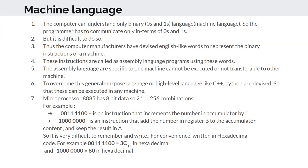These English-like instructions are called assembly language. Assembly language is specific to one particular machine — an instruction that works on Intel will not work on Zilog. Since the assembly language is given by the manufacturer, the programmer must learn the assembly language of that specific machine. Assembly language of one machine cannot be executed or transferred to another machine.